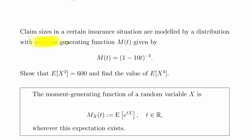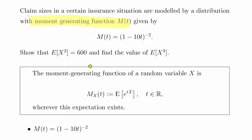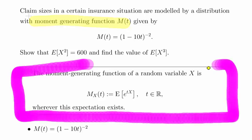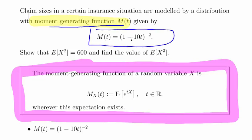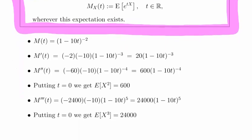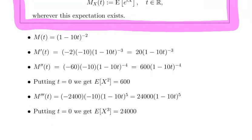In this presentation we're going to look at moment generating functions. We have a definition here, but this video focuses on one key aspect. Claim sizes in a certain insurance situation are modeled by a distribution with a moment generating function m of t equal to (1 minus 10t) to the power of minus 2. The question asks us to show that E[X²] = 600 and to find E[X³].